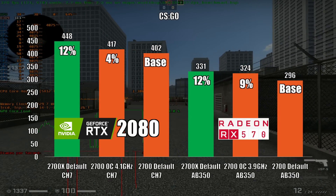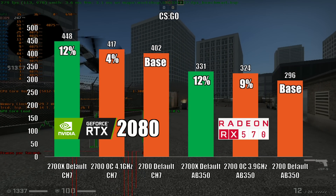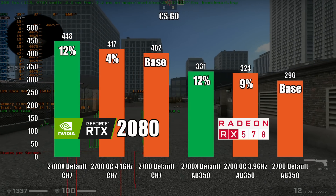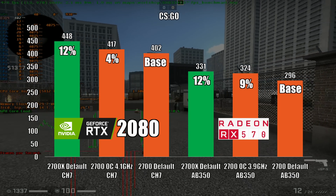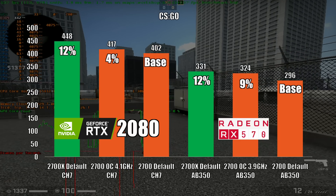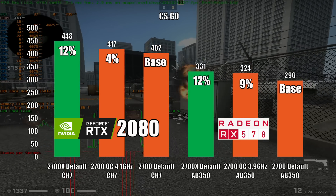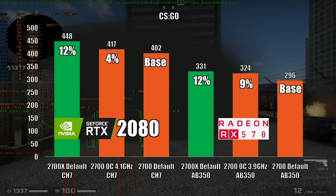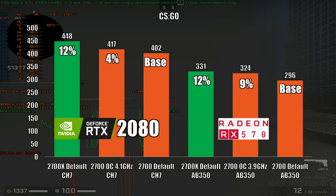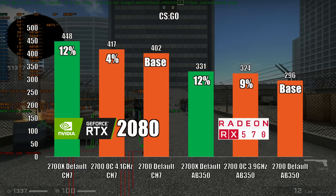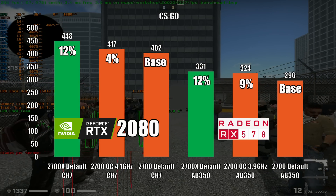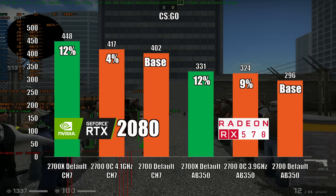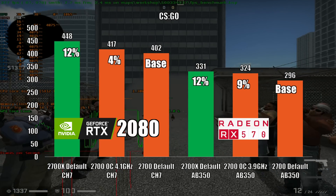Counter-Strike GO is very useful to represent esport games. It's not so heavy on the GPU, but very demanding for the CPU to achieve high frame rates. The 2700X leads the chart, but the non-X version is not too far behind, with enough FPS even for a pro player.